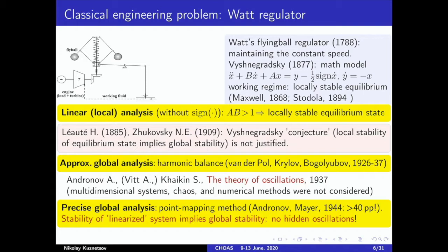His work was criticized by the famous scientist Zhukovsky, who pointed out that linearization, especially for discontinuous systems, has to be justified and in general cannot be used for the study of non-local behavior. After that, Van der Pol, Krylov, and Bogolyubov suggested the so-called harmonic balance method, which was the first effective method for the study of oscillations. While the harmonic balance method confirms the conjecture, it cannot be rigorously justified and may give inaccurate results. Only in 1944, Andronov finally confirmed the Vyshnygradsky conjecture with the help of his theory of oscillations.